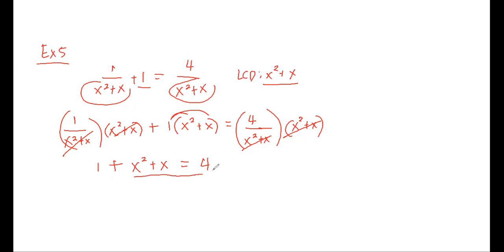Since this is a quadratic equation, we need to write it in its standard form. x squared plus x plus 1 minus 4 equals 0. So we have x squared plus x. Sorry, that's not plus. That should be minus 3 equals 0.